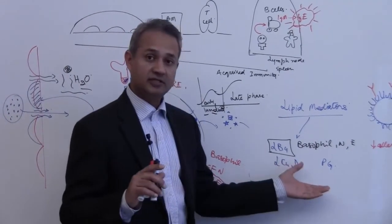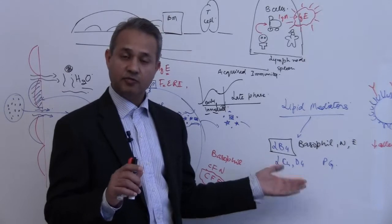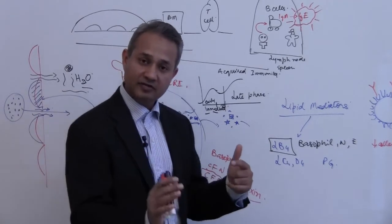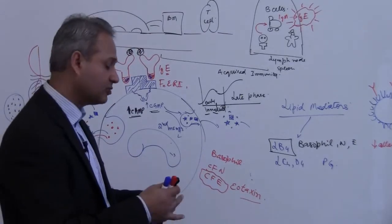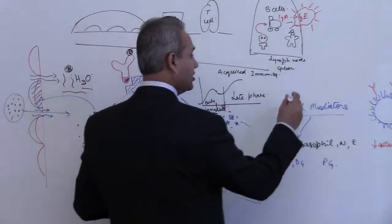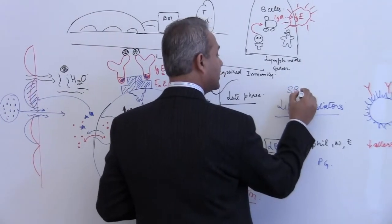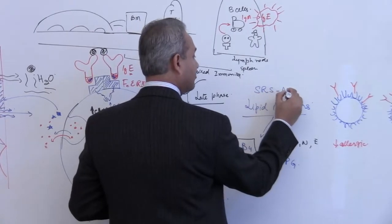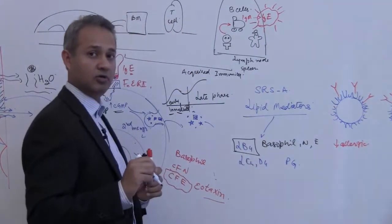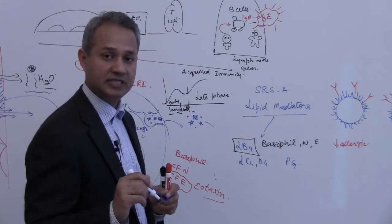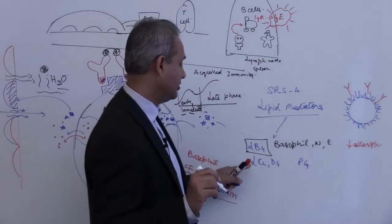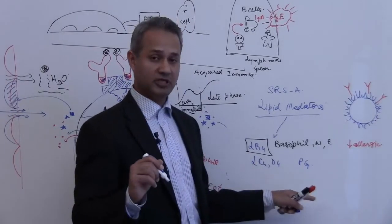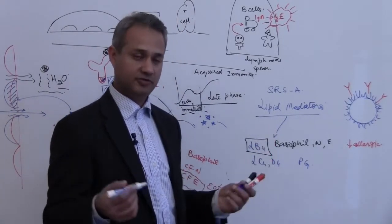These substances which are the lipid mediators are generated afterwards and then released again. The poor cell is trying to help us but maybe it is killing us in this process. These substances are called slow reacting substances of anaphylaxis. These are the substances: leukotriene B4, C4, D4, prostaglandins and so on, some other factors.